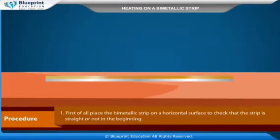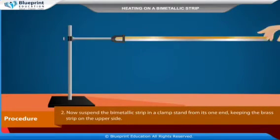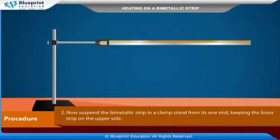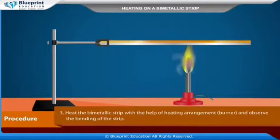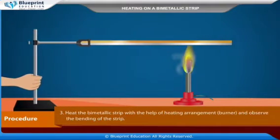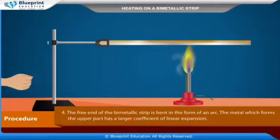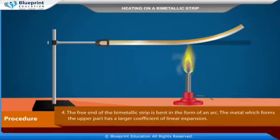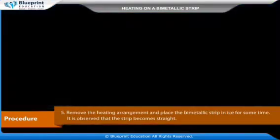Procedure: First, place the bi-metallic strip on a horizontal surface to check that it is straight at the beginning. Then suspend the bi-metallic strip in a clamp stand from one end, keeping the brass strip on the upper side. Heat the bi-metallic strip with a burner and observe the bending of the strip. The free end of the bi-metallic strip bends in the form of an arc.